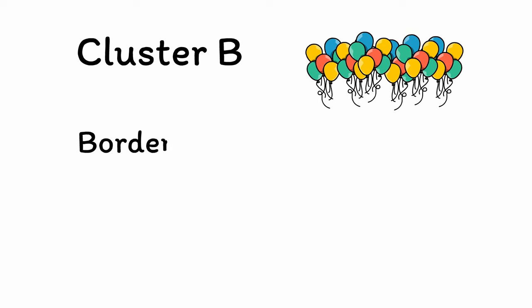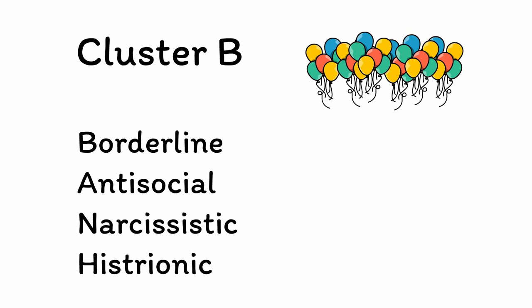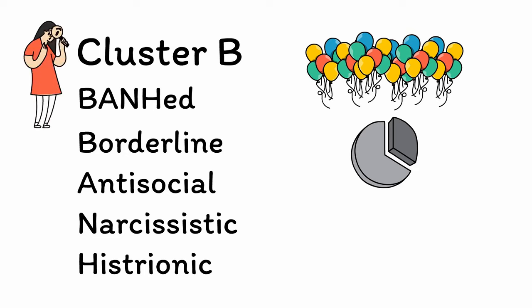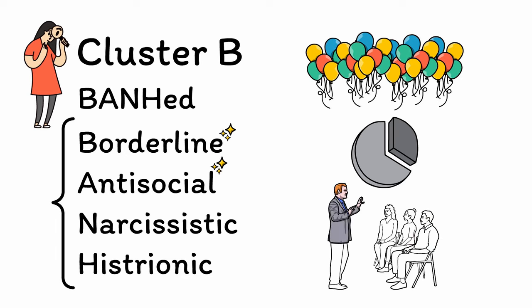Now that we've covered Cluster A, let's move on to Cluster B. As you'll remember from our personality disorder party mnemonic, Cluster B consists of borderline, antisocial, narcissistic, and histrionic personality disorders — the most likely to get banned from future parties. Cluster B personality disorders are very common in clinical settings, so we'll cover them in higher detail, including entire videos on borderline and antisocial personality disorder. In this lecture, we'll focus on the underlying patterns common to all four disorders and explore reasons for differences in clinical presentation.